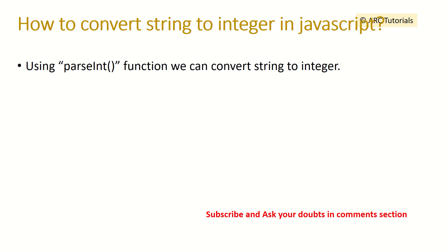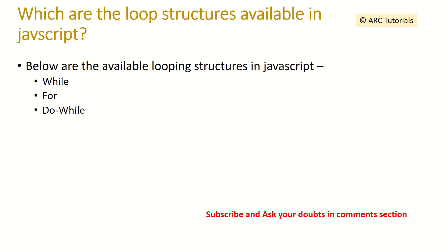How to convert strings to integers in JavaScript? If you want to convert a string into an integer, we will have to use the parseInt() method to convert a string into an integer.